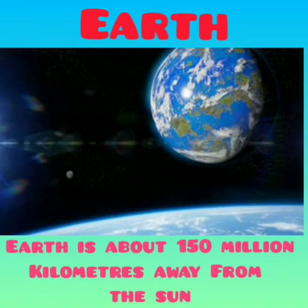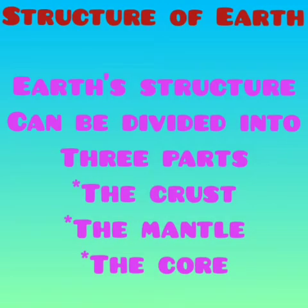Earth is not a perfect sphere. It is slightly flattened at the poles. It has a diameter of 12,000 km at the equator. Earth's structure can be divided into three parts: the crust, the mantle, and the core.